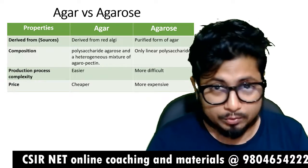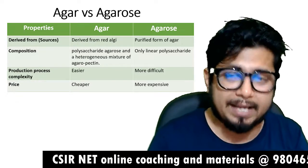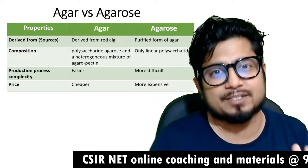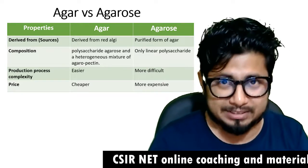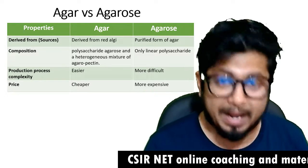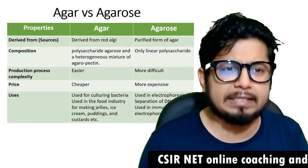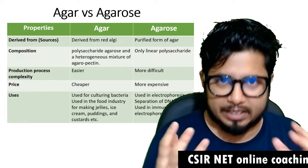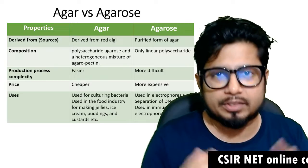In terms of price, agar is cheaper because it is easily derived. Agarose, since it takes more time, more effort, and thus more money to produce, is more expensive to buy.